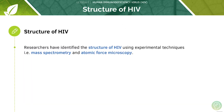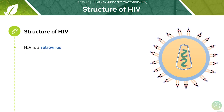Now let's look at HIV, which is the virus that can cause AIDS. First we'll look at its structure before understanding how it causes damage. Researchers have identified the structure of HIV using experimental techniques such as mass spectrometry and atomic force microscopy. HIV is known as a retrovirus with a complex structure.